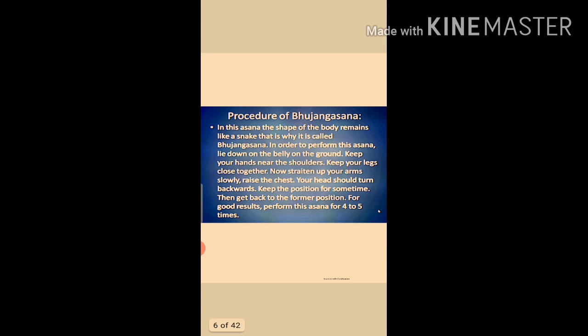Procedure of Bhujangasana: Lie with your stomach and toes flat on the floor. Place your palms down in front of your shoulders and touch elbows to the waist. While inhaling, raise the front part of your body — slowly raise the head and chest, arching backwards.